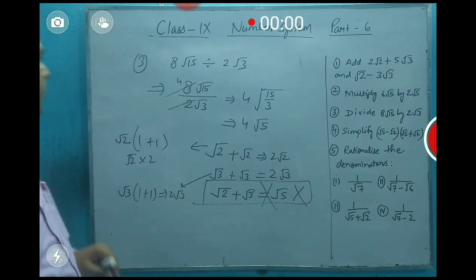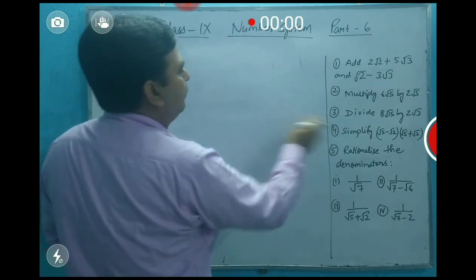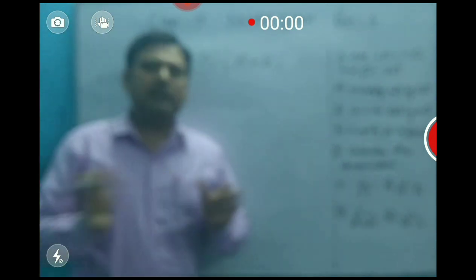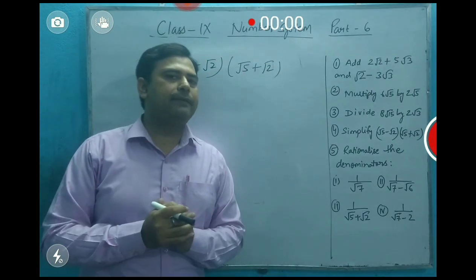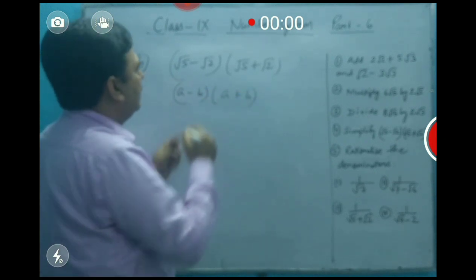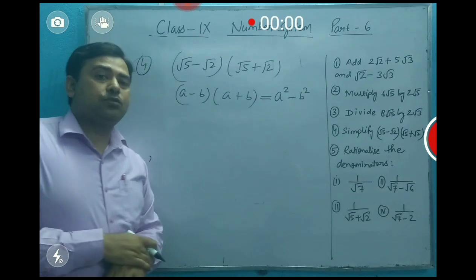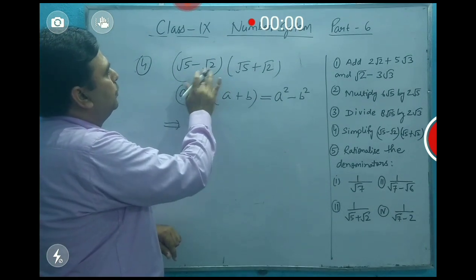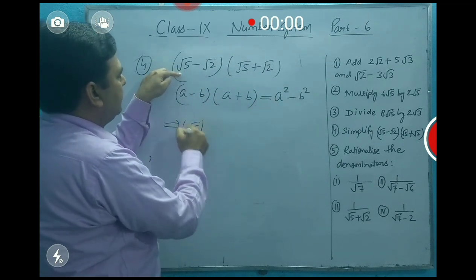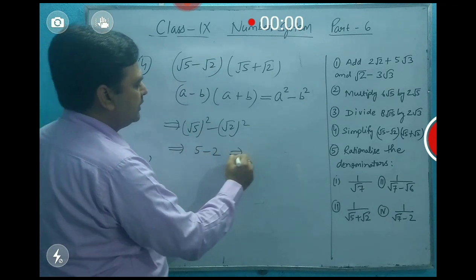Now, the fourth part of the question: simplify (√5 - √2)(√5 + √2). Wherever an algebraic identity format appears, you can apply it. Here we have the identity (a - b)(a + b) = a² - b². Applying this identity, we get (√5)² - (√2)² = 5 - 2 = 3.